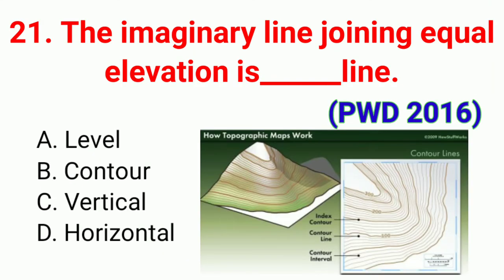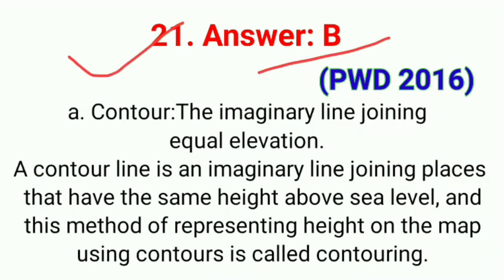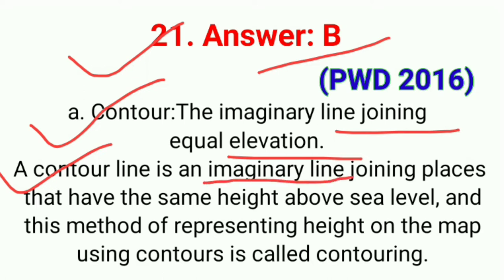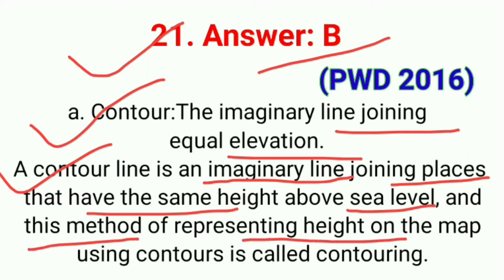Question number twenty-one: The imaginary line joining equal elevations is called. The correct answer is option B, contour line. A contour line is an imaginary line joining places that have the same height above sea level. The method of representing height on a map using contours is called contouring.